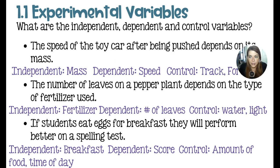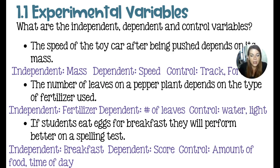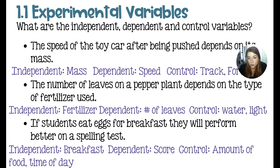For the second one, the number of leaves on a pepper plant depends on the type of fertilizer used. The independent variable — what we are testing — is the type of fertilizer. The dependent variable is the number of leaves; you would count that, and counting is a measurement. Some controls: the amount of water, the amount of light, the type of soil, growing season — plenty.